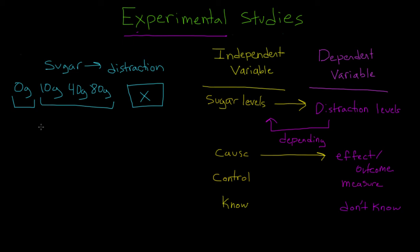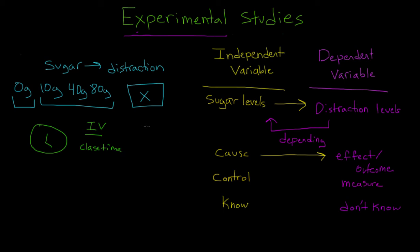To move away from the sugar example, let's say I wanted to do a study looking at how many students looked at a clock for different lengths of class time — maybe using that as a measure of how bored the students are. I can control the length of class time, so maybe it's 50 minutes or 120 minutes, but I can't control the number of times students look at the clock. Our independent variable, or IV, would be class time, and our dependent variable, or DV, would be the number of times a student looked at a clock.